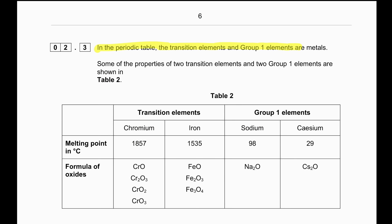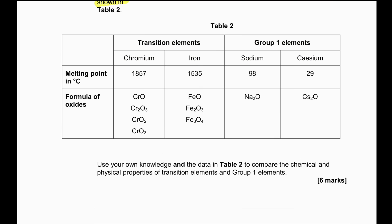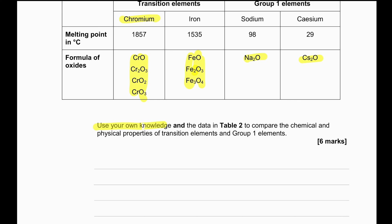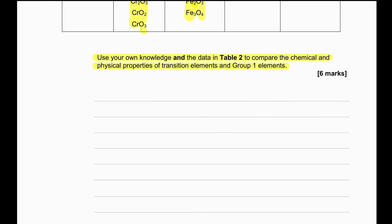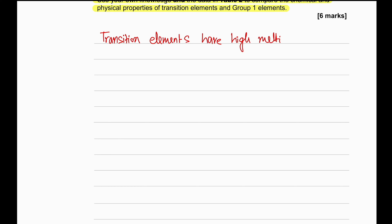In the periodic table, transition elements and group 1 elements are metals. Table 2 shows the properties of two transition elements and two group 1 elements. We can see that chromium and iron form multiple oxides, whereas sodium and caesium only produce one oxide with one oxidation state. Transition elements have high melting point, high density, they are strong and hard. Group 1 elements have low melting point, low density, and they are soft.